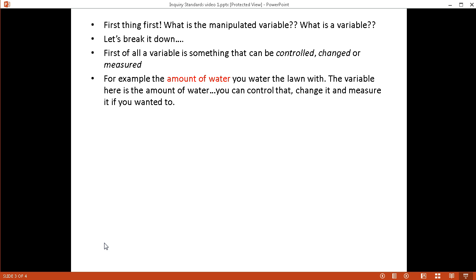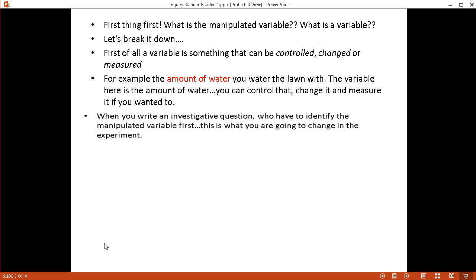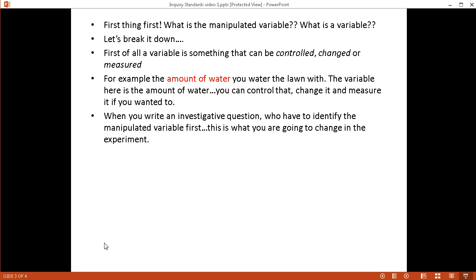Here's an example for you. Amount of water, right? For example, the amount of water you water the lawn with. The variable here is the amount of water, because if we wanted to, we could control that, we could change it, or we could measure it if we wanted to. When you write an investigative question, you always need to make sure you're identifying your manipulated variable. What is it that you're going to change in your experiment?